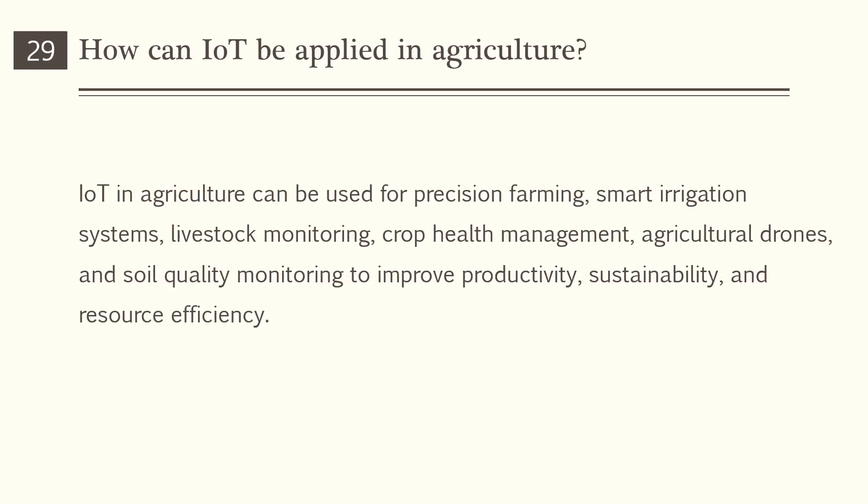How can IoT be applied in agriculture? IoT in agriculture can be used for precision farming, smart irrigation systems, livestock monitoring, crop health management, agricultural drones, and soil quality monitoring to improve productivity, sustainability, and resource efficiency.